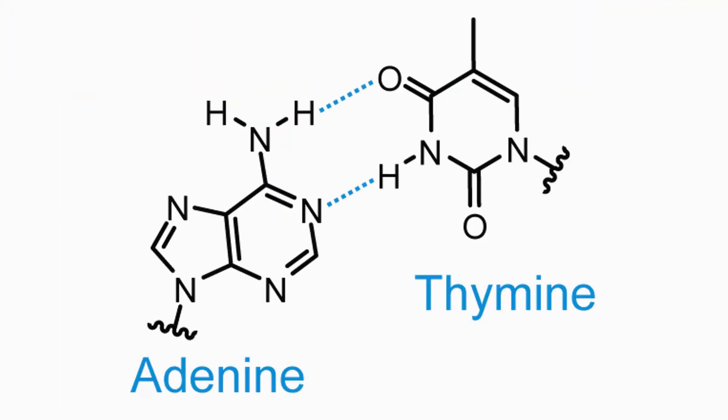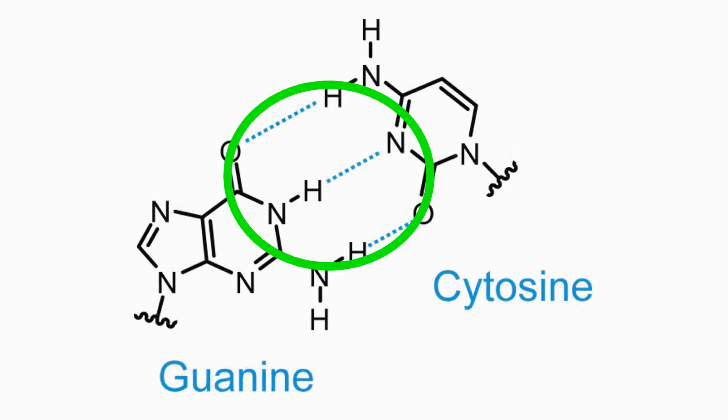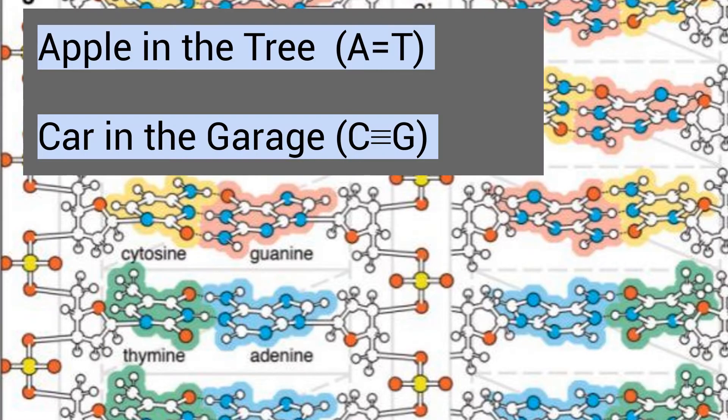The bases adenine and thymine form a complementary base pair with two hydrogen bonds holding the A and T bases together. The other base pair combination is cytosine with guanine. There are three hydrogen bonds that form in the G-C base pairs. The mnemonic apple in the tree and car in the garage can be helpful in remembering these base pairing rules.